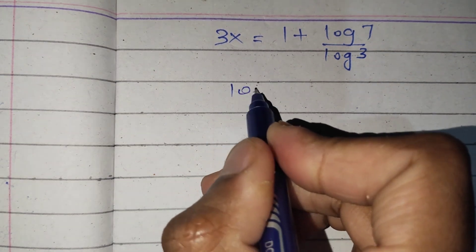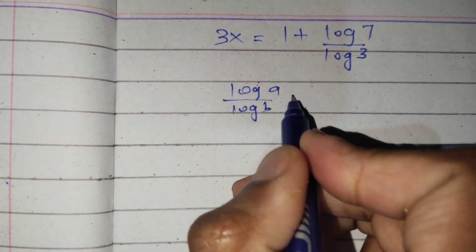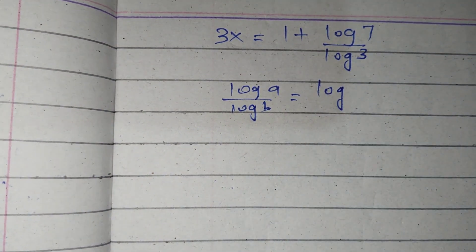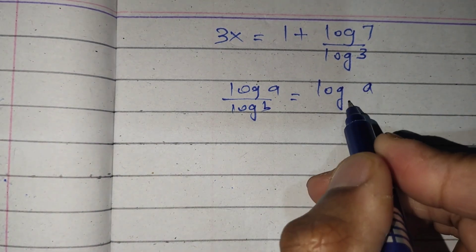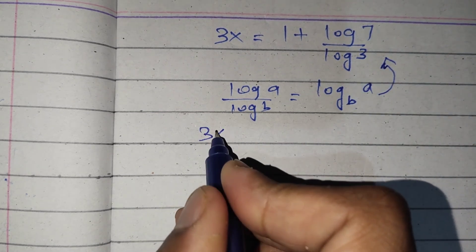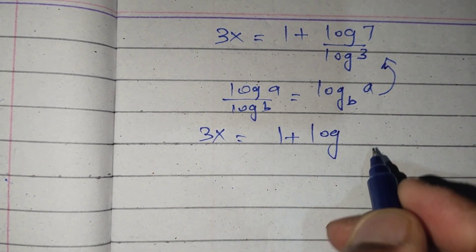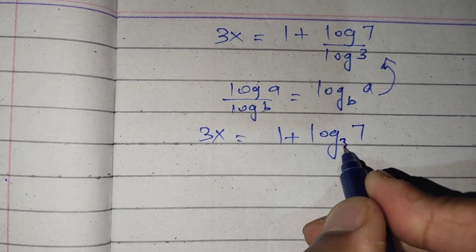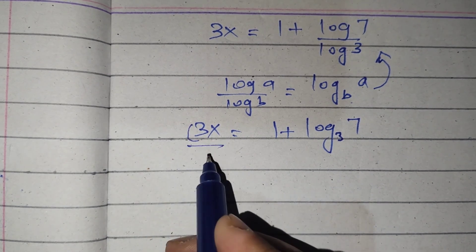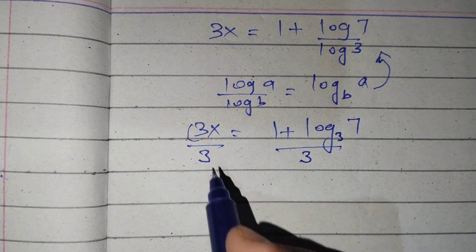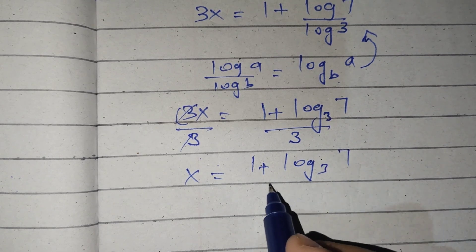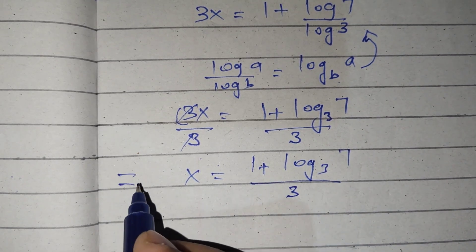We know that log of a divided by log of b equals log of a to the base b. Using this formula on the right side, it becomes 3x equals 1 plus log base 3 of 7. Now we divide both sides by 3, and the coefficient 3 cancels, giving x equals (1 plus log base 3 of 7) divided by 3.